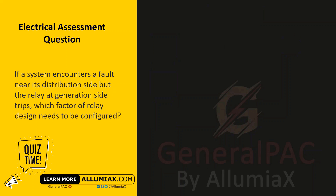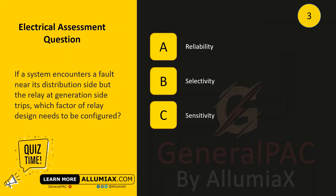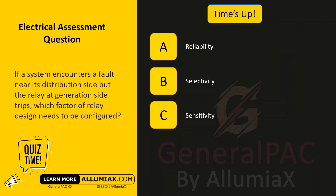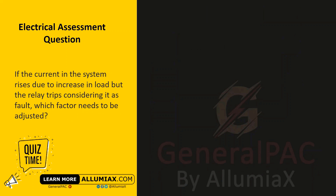If a system encounters a fault near its distribution side, but the relay at the generation side trips, which factor of relay design needs to be configured? A: reliability, B: selectivity, C: sensitivity. The answer is B — selectivity. Selectivity is the factor which decides which circuit breaker needs to be operated, which in this case should be the one near the distribution end.